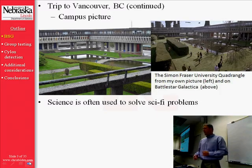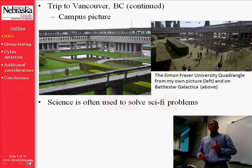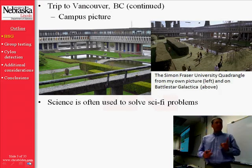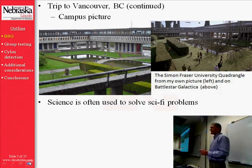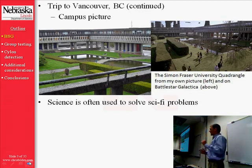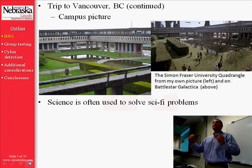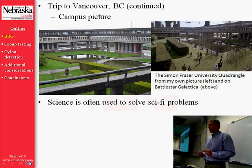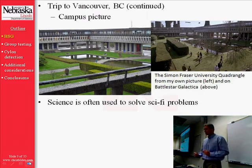Today what I'm going to do is talk about one specific problem that occurred on Battlestar Galactica, and how statistical science could have been used to solve that problem, and perhaps even dramatically change the course of the TV show.